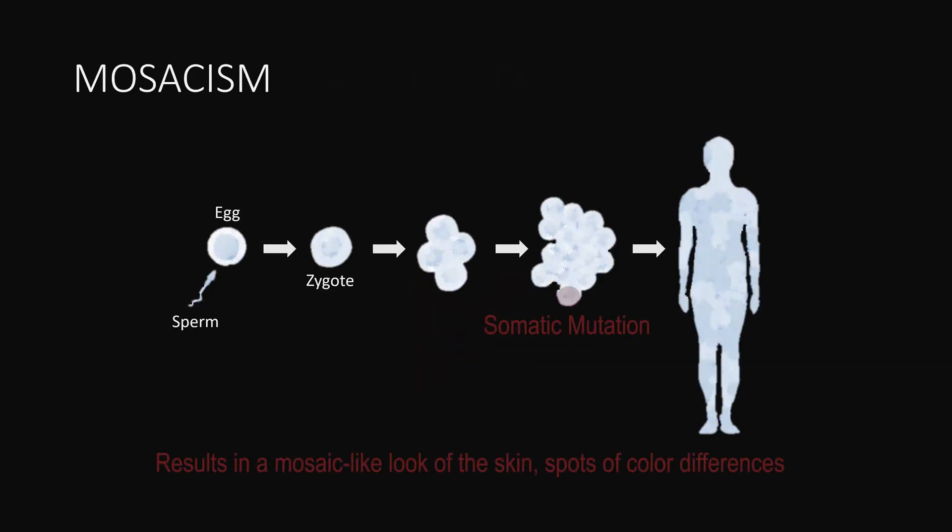Mosaicism occurs when there are genetically distinct cell lines in the same person. There are two types. Somatic mosaicism arises from mutations due to mitotic errors after fertilization and makes its way through multiple tissues and organs.